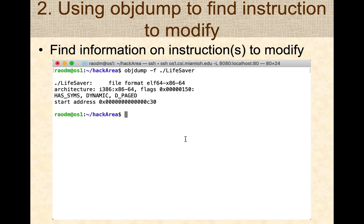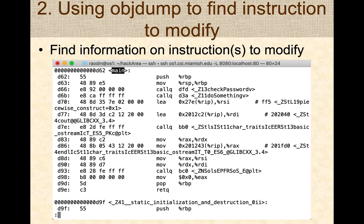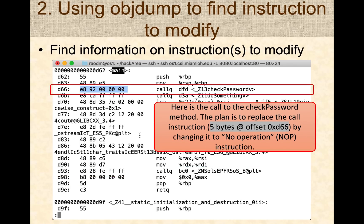Now let's find the instructions we want to modify using objdump to disassemble the executable. I'm going to look for the main method, which was calling the check_password method. Notice that in main there's a call to check_password — we have the call instruction. This is at offset 6dd in hexadecimal, and here are the five bytes of that instruction. I'm going to modify — basically NOP out — those five bytes.